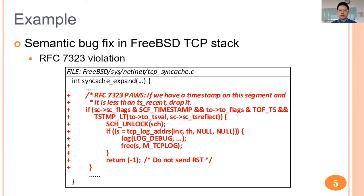This figure shows an example commit of fixing a semantic bug in the FreeBSD TCP stack. The annotation of this commit describes that it fixed an RFC 7323 violation. Specifically, the TCP stack mistakenly accepted packets with decreasing timestamp values. To fix the bug, this commit adds several checks about the timestamp value to drop invalid packets.